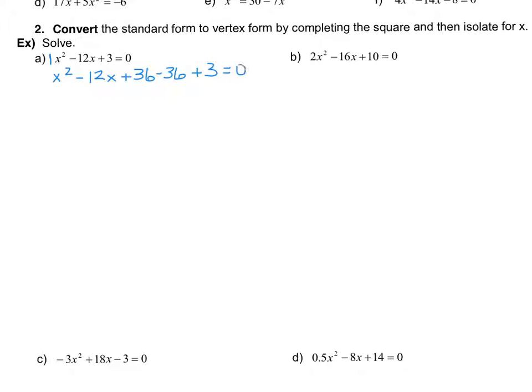The reason we do that is to cook this up to be a perfect square that we can factor, and then we combine these two constant terms. We have x minus 6 all to the exponent of 2. I took the square root of the first, square root of last, sign from the middle, all to the exponent of 2, and then minus 36 plus 3 should be minus 33 equaling 0.